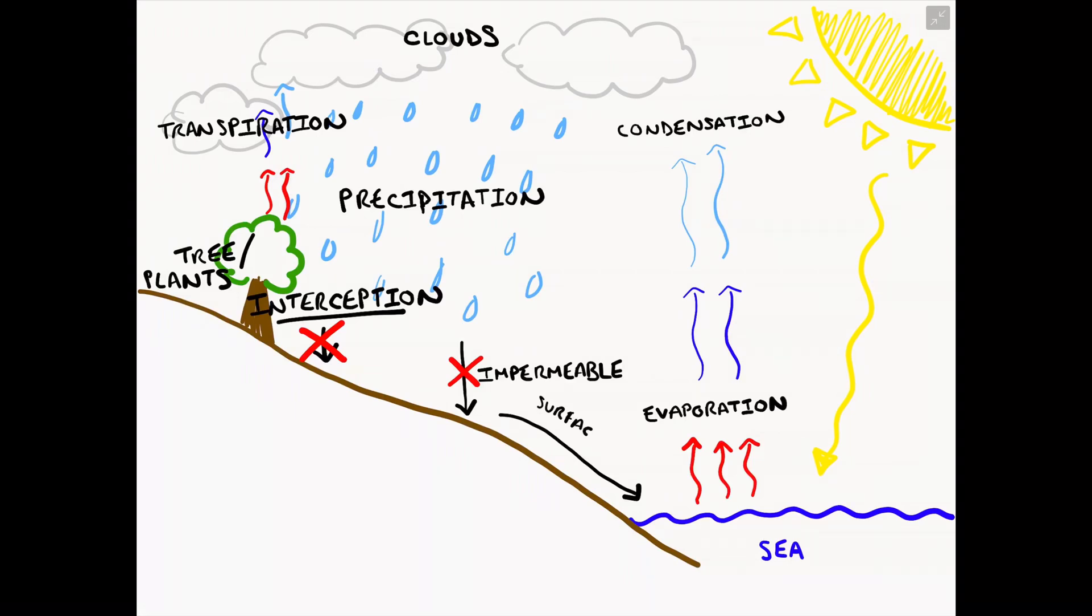They are impermeable, which means that the water has no other choice but to run over the land surface, known as surface runoff. This water might lead itself into drain pipes if it's in an urban area. If it is in a rural area, it might collect in a lake or go to a river, but eventually it's going to lead back to a body of water through surface runoff.